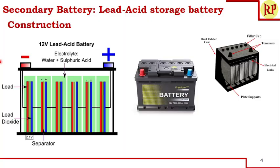Let us understand the construction of the lead-acid battery. Here we have 6 cells connected in series. Each cell contributes 2.1 volts, so overall we have 12 volts from this battery. Because 6 cells are connected in series, we call it a battery. We have 6 anodes and 6 cathodes. The red ones represent anodes and the blue ones represent cathodes. The 6 anodes, which are lead, are connected together and a single lead comes out as the negative terminal. The 6 lead-dioxide cathodes are connected together and taken out as the positive terminal of the battery. The electrolyte is 21% sulfuric acid — that is, 21 ml of concentrated sulfuric acid and 79 ml of water.